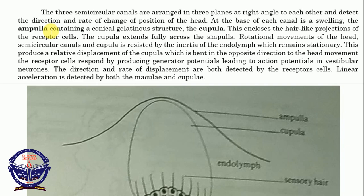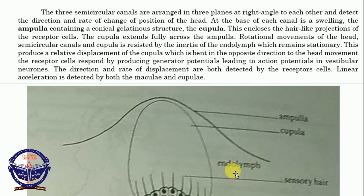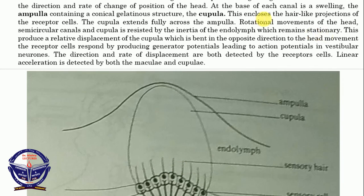The ampulla contains a conical gelatinous structure called the cupula. Looking at the diagram within the semicircular canal and within the ampulla: this is the ampulla and then we have the cone-shaped cupula inside. Here we have the endolymph within the ampulla, and here we have the sensory hair cells similar to those present in the organ of Corti. The cupula encloses the hair-like projections of the receptor cells. The cupula extends fully across the ampulla.